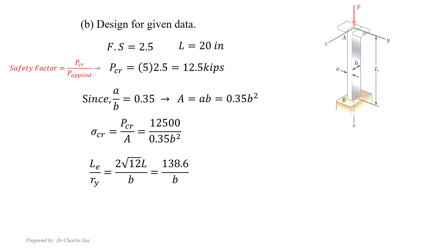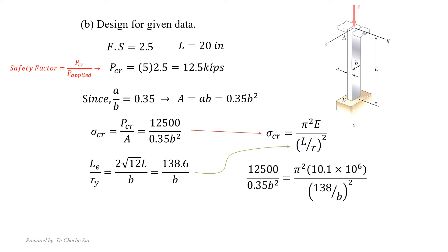We take the slenderness ratio from either the XY or XZ plane — both give the same answer. Substituting the L value gives a slenderness ratio of 138.6 / b. Substituting both parameters into the critical stress formula and performing the calculation gives b = 1.62 inches. Substituting b into A = 0.35b gives a = 0.567 inches.